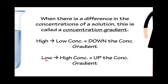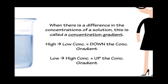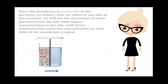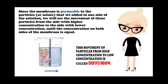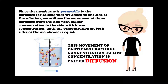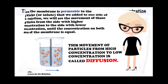Moving down the concentration gradient requires no energy. When particles move from an area of low concentration to an area of high concentration, this is considered going up the concentration gradient, or against the concentration gradient. This process requires energy in the form of ATP. Since this membrane is permeable to the particles we have added, we will see movement of those particles from the side with higher concentration to the side with lower concentration, until the concentration on both sides is equal. This movement is called diffusion.